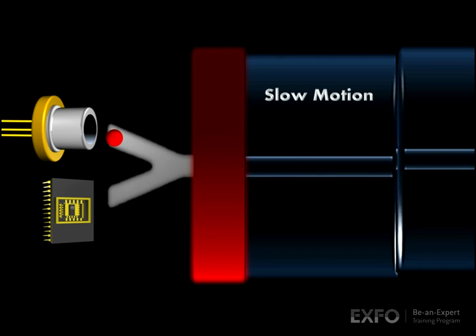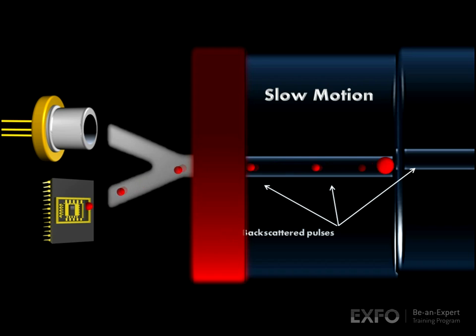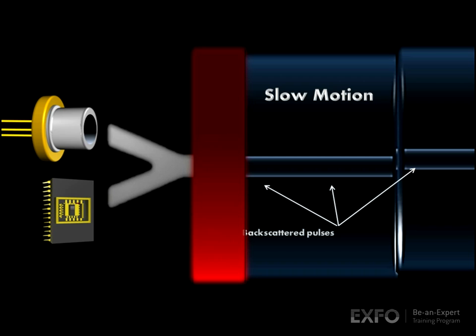If we look at individual pulses in slow motion, we can see that as the OTDR generates one pulse down the fiber core, multiple backscattered pulses are produced and travel in the opposite direction towards the detector.